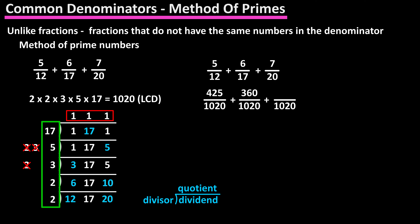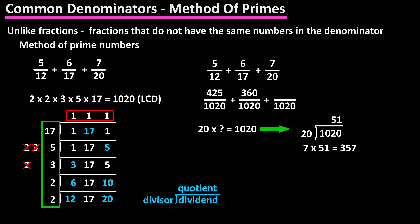For the third fraction, 7 over 20, in order to get 1,020 in the denominator, we divide 1,020 by 20 to find the multiplier, which is 51. Next we need to multiply the numerator of 7 by the same value of 51, which equals 357. So our new fraction is 357 over 1,020.